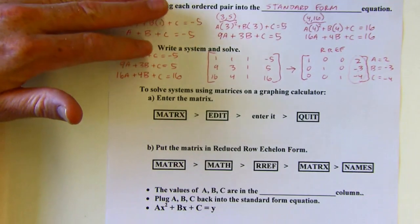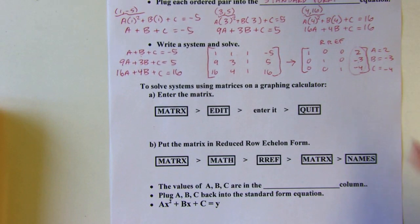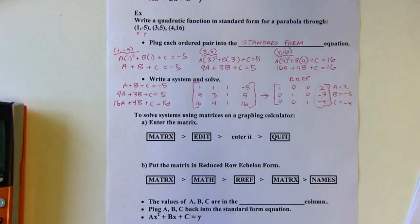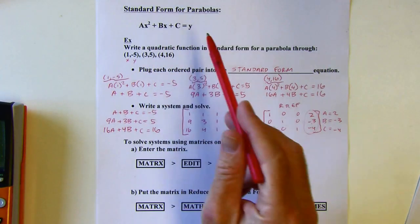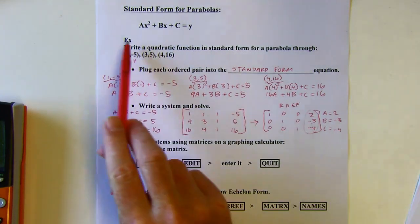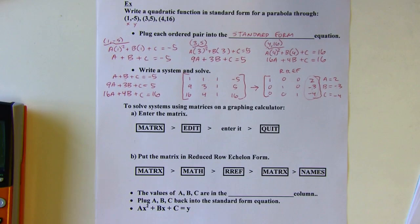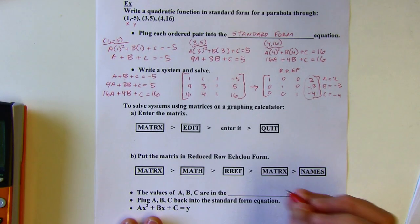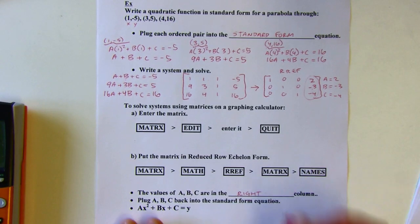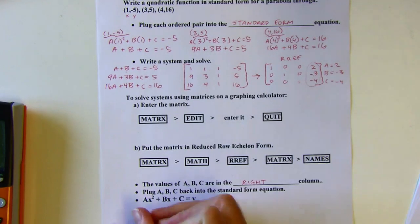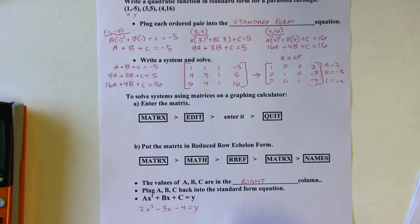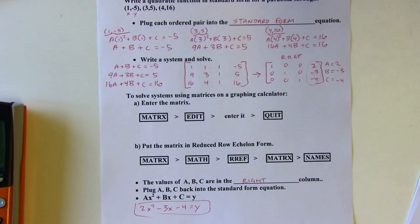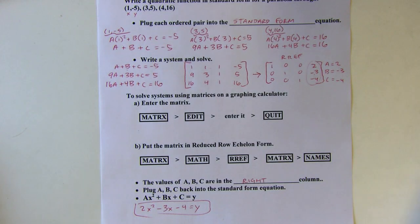I've done 99% of the work, but I still haven't answered the question. We're asked to write a quadratic function in standard form. I know what A, B, and C are now, but I still need to write the equation. A lot of times people just tell me what A, B, and C equal, but this is asking for an equation to fit those points. So: A was 2, B was negative 3, C was negative 4. You could write y equals or equals y — there is the equation of the parabola that fits those three points.